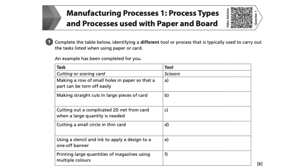For this question, we are asked to complete the table below, identifying a different tool or process that is typically used to carry out the tasks listed when using paper or card. We are told that an example has been completed for you. We can also see in the bottom right-hand corner that the total marks available for this question are 6.